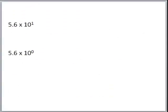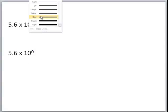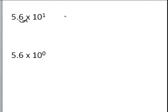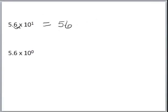On the next slide, we look at two cases that tend to trip people up. When you have an exponent of 1, like 5.6 times 10 to the first, you move the decimal one space to the right, giving you 56. When you have a power of zero, the exponent is telling you to move the decimal zero times, so you don't move it at all — it stays 5.6.